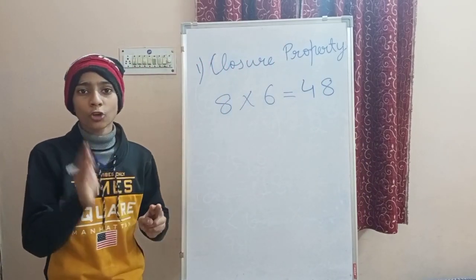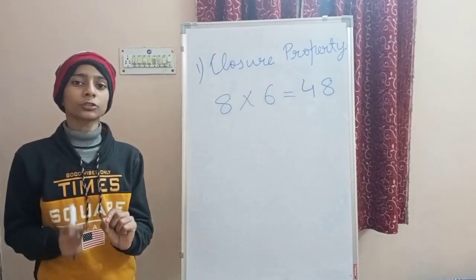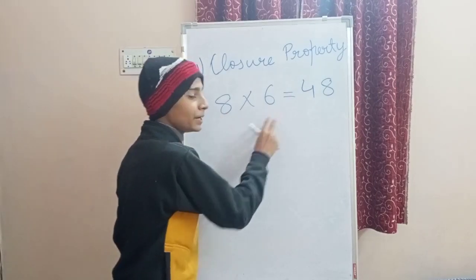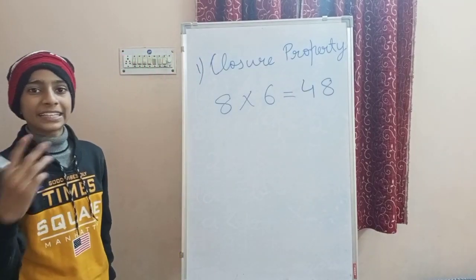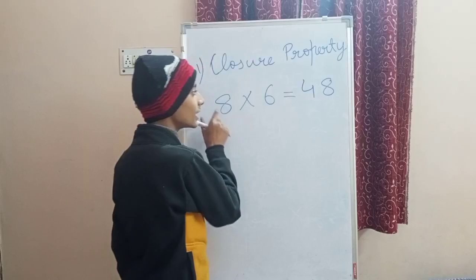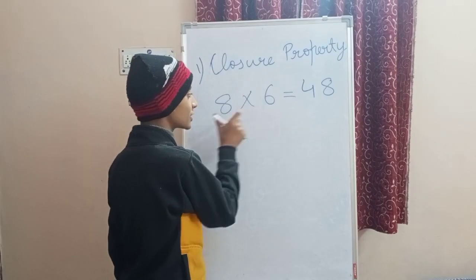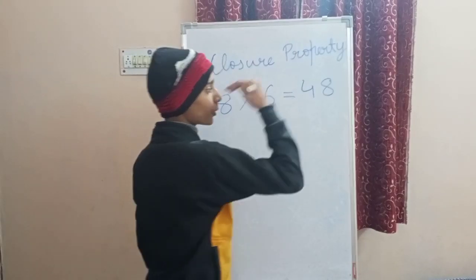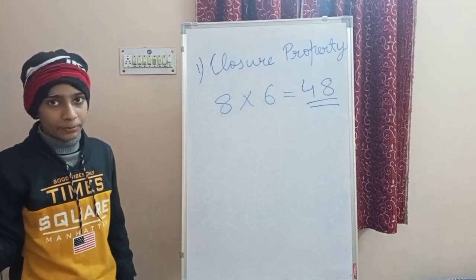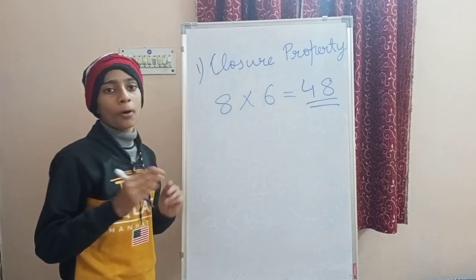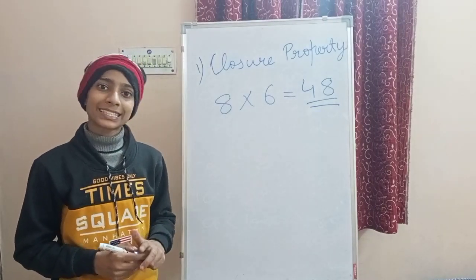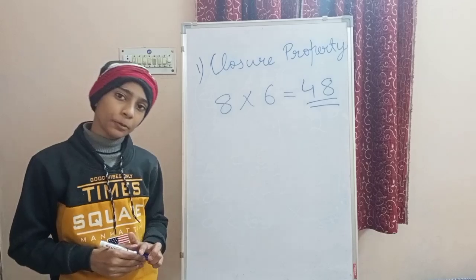Closure property simply means that if A and B are two whole numbers, then the product of them will also be a whole number. Here A is 8 and B is 6, and the product 48 is also a whole number. This means closure property holds on multiplication.